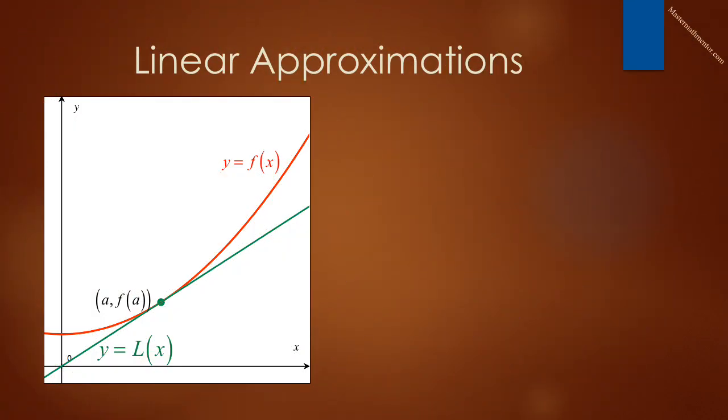Suppose we have a function, y equals f of x, as shown on the graph in red. We have a point on that curve, a, f of a. At that point, we construct the green tangent line using the derivative. Let's call that function, y equals L of x.